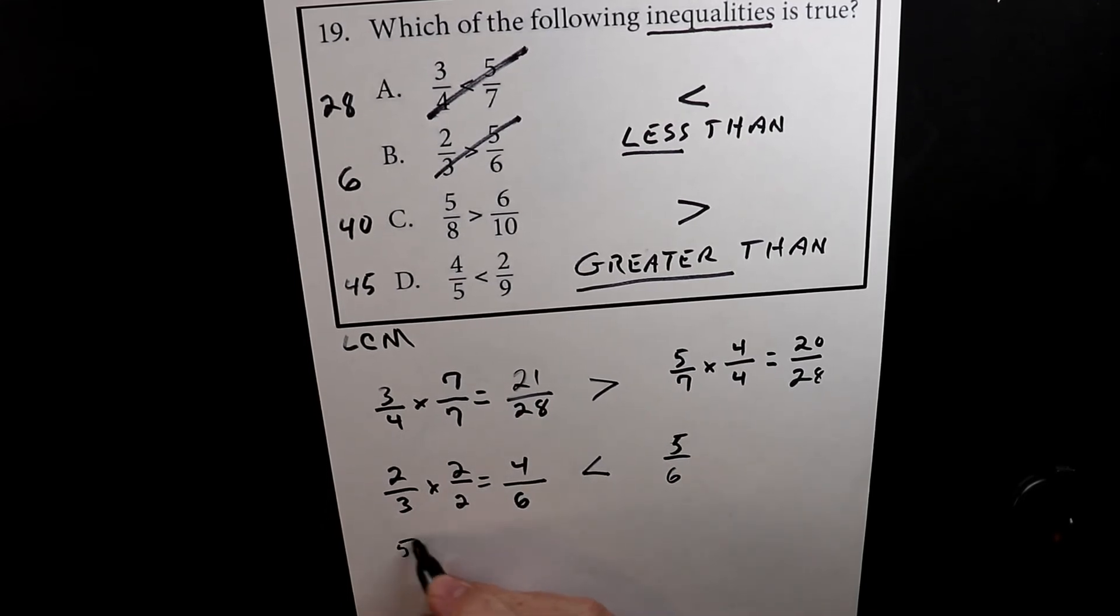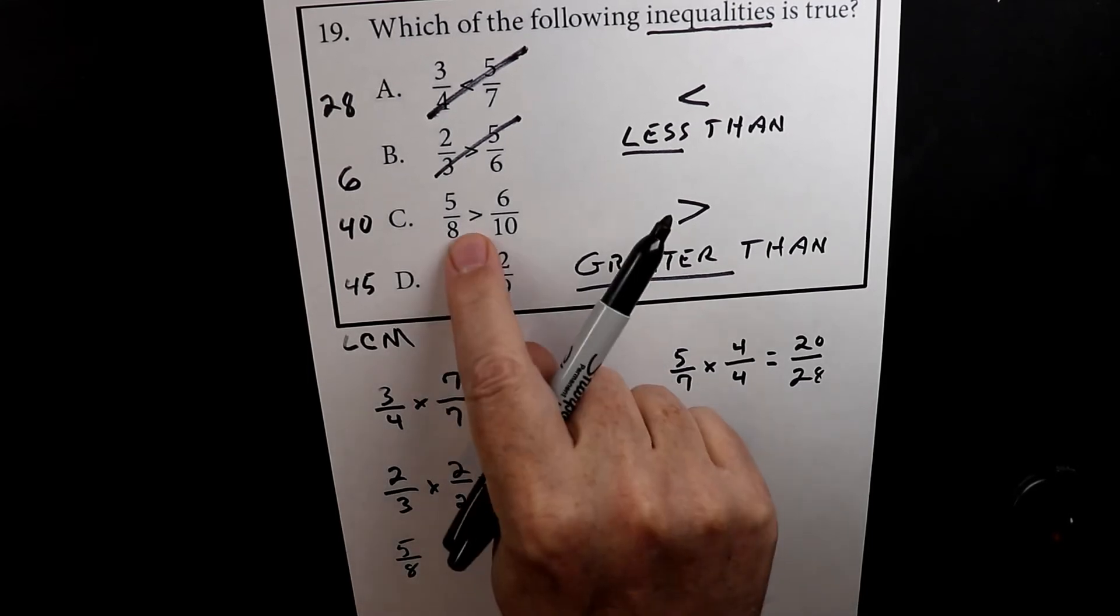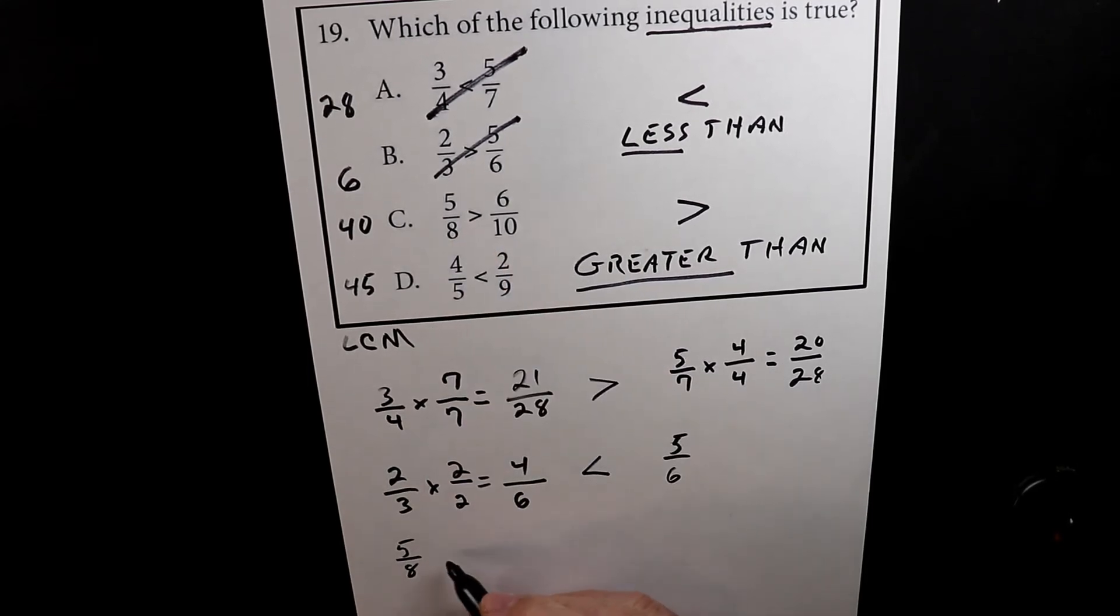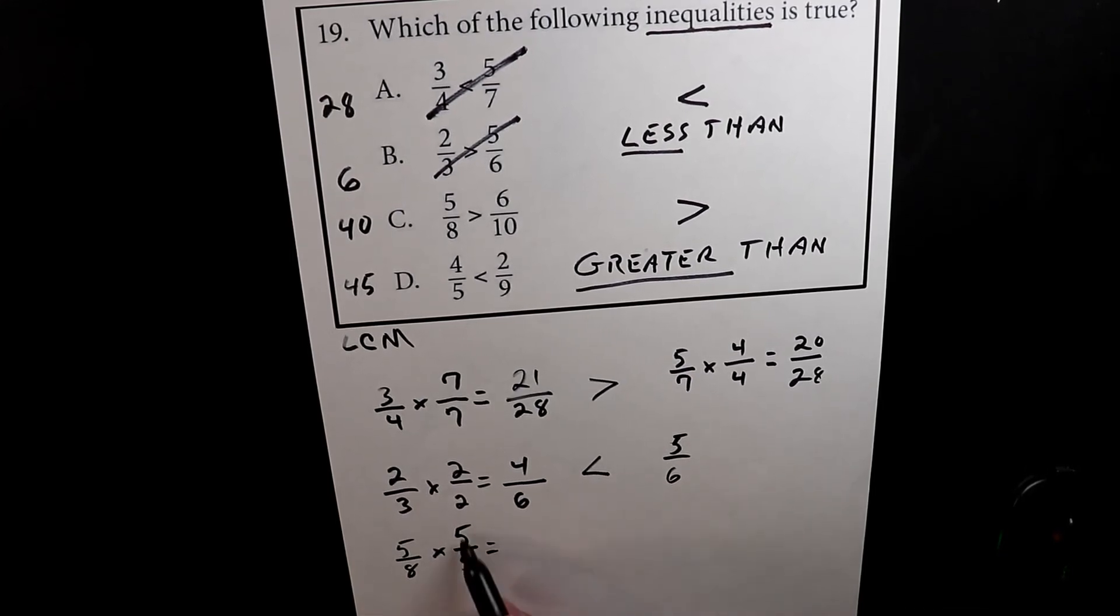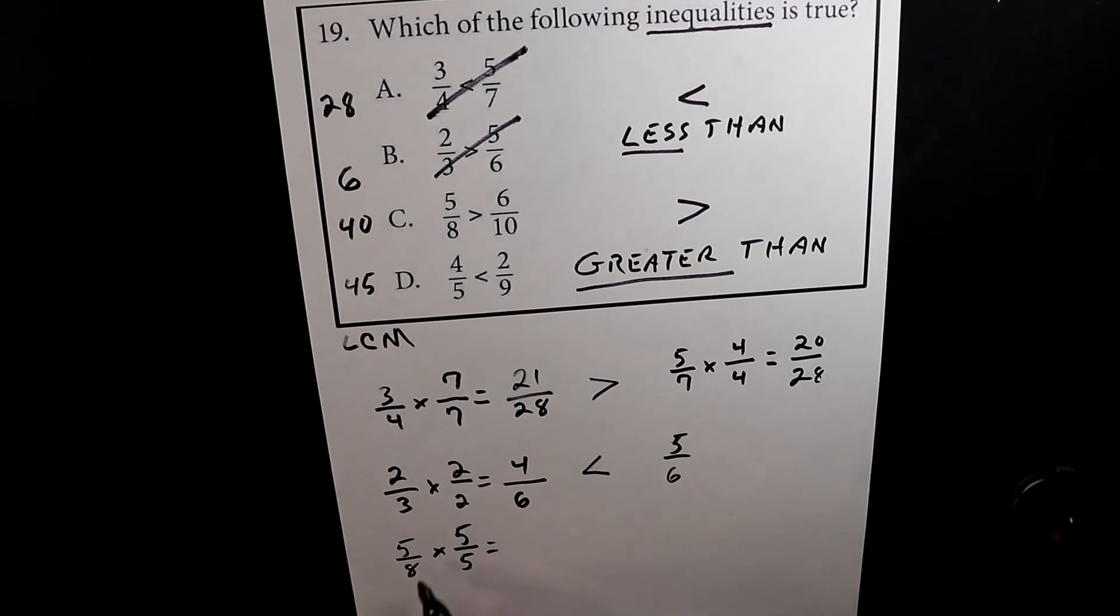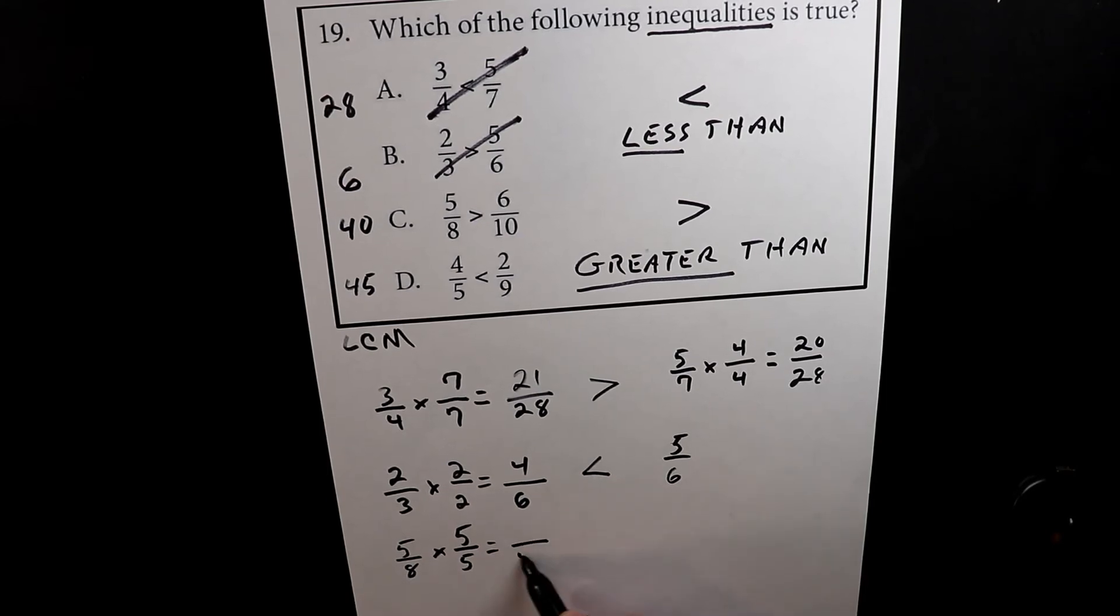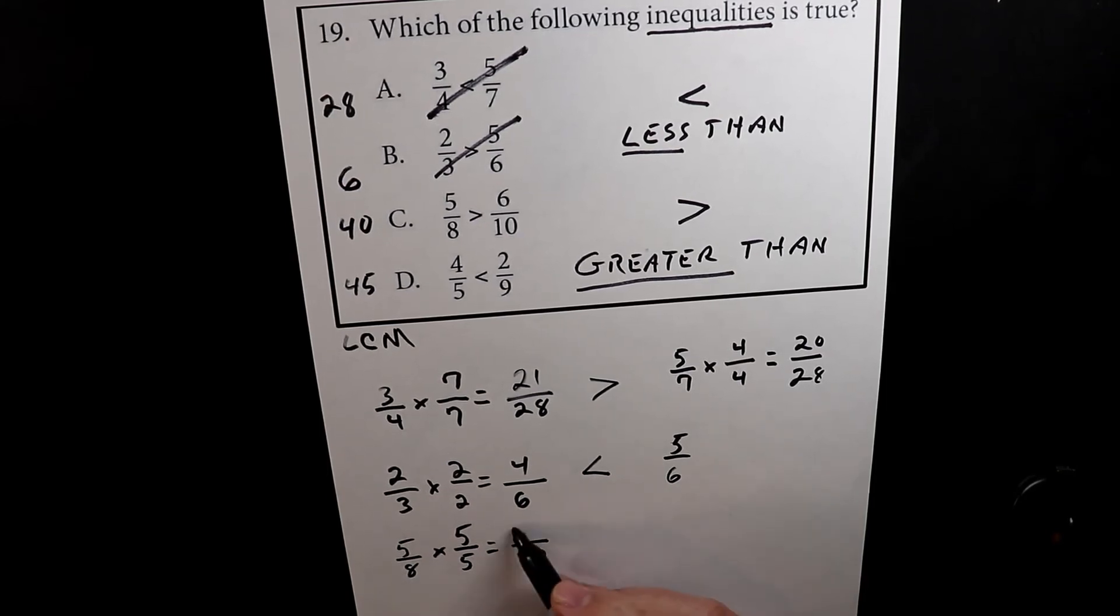So let's look at the next one. So we have 5 over 8, and we're going to turn the 8 into a 40. So we have to multiply it by 5 over 5, because 5 over 5 is 1. And again, I just want to remind you, when you multiply a number by 1, it might look different, but it's still the same value. So 8 times 5 is 40, 5 times 5 is 25.